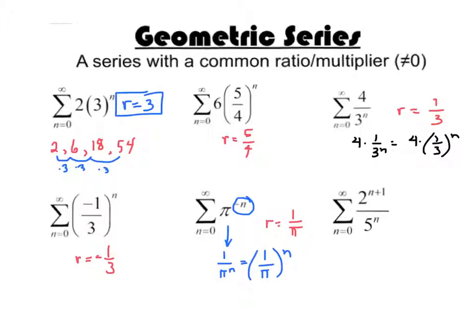This last one, I might think about rewriting this as 2 multiplied by 2 to the n. Now just make sure you see: 2 multiplied by 2 to the n is 2 to the n plus 1, right? Because when we are multiplying exponential functions, we add the exponents when the bases are the same.